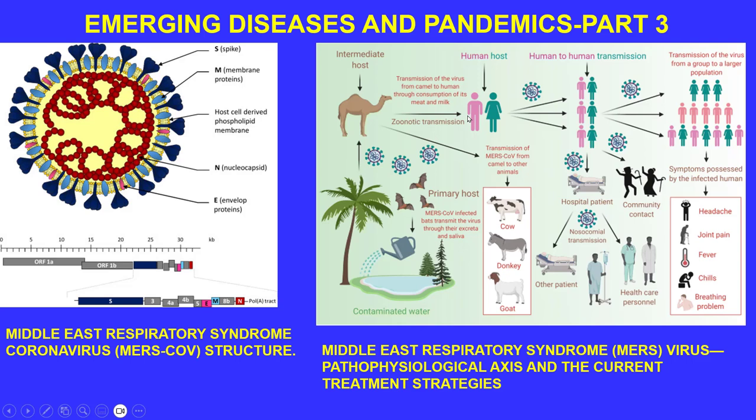MERS-CoV can also transmit from camels to other animals such as cows, donkeys, and goats. Human-to-human transmission can occur through community contact, hospital patient contact, and nosocomial transmission where healthcare personnel become infected. When looking at transmission from a group to a larger population, the pattern becomes clear.